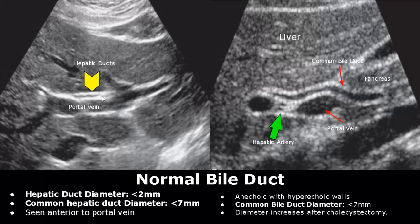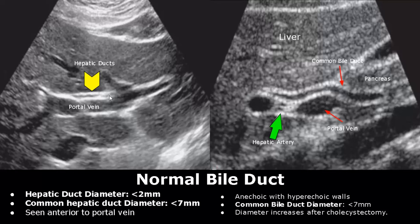The right and left hepatic ducts join together to form the common hepatic duct. Then the cystic duct, which comes from the gallbladder, joins the common hepatic duct to form the common bile duct. The hepatic duct measures less than two millimeters in diameter. The diameters of the common hepatic duct and common bile duct are variable, but a value of seven millimeters has been used for normal values in recent years.